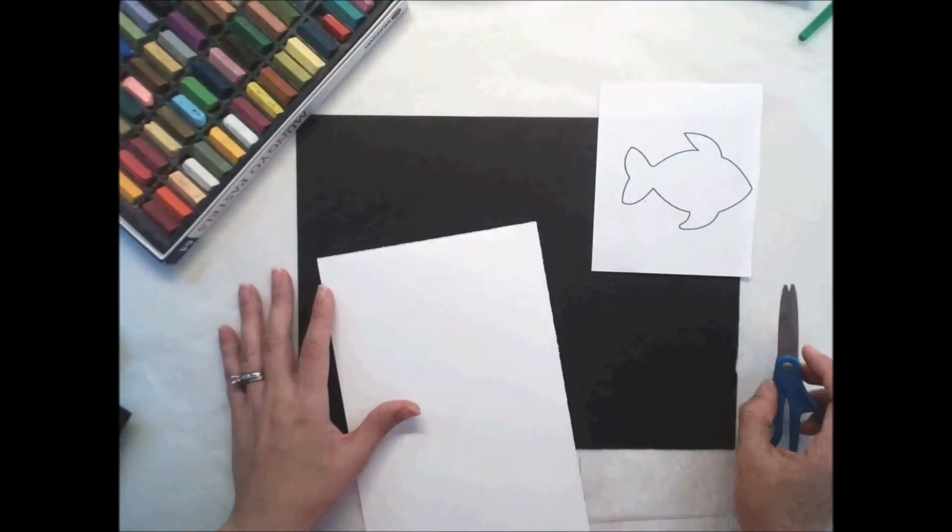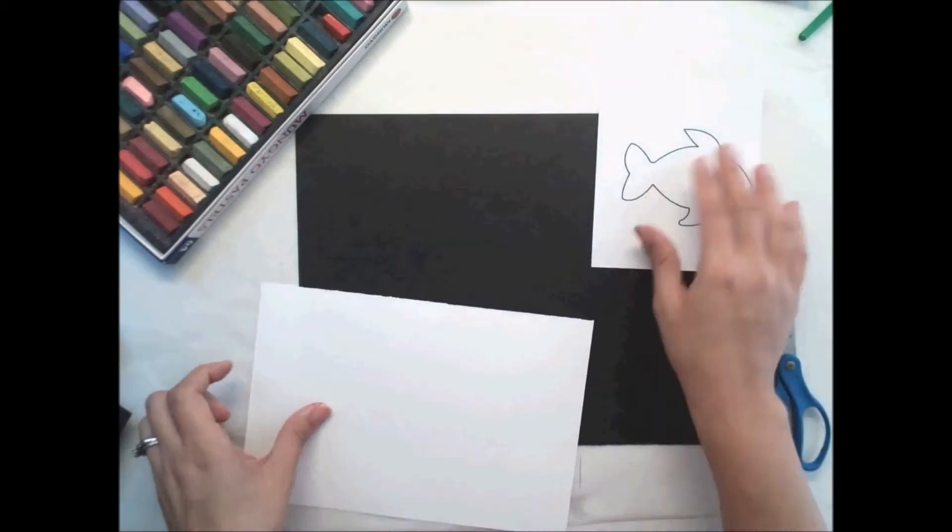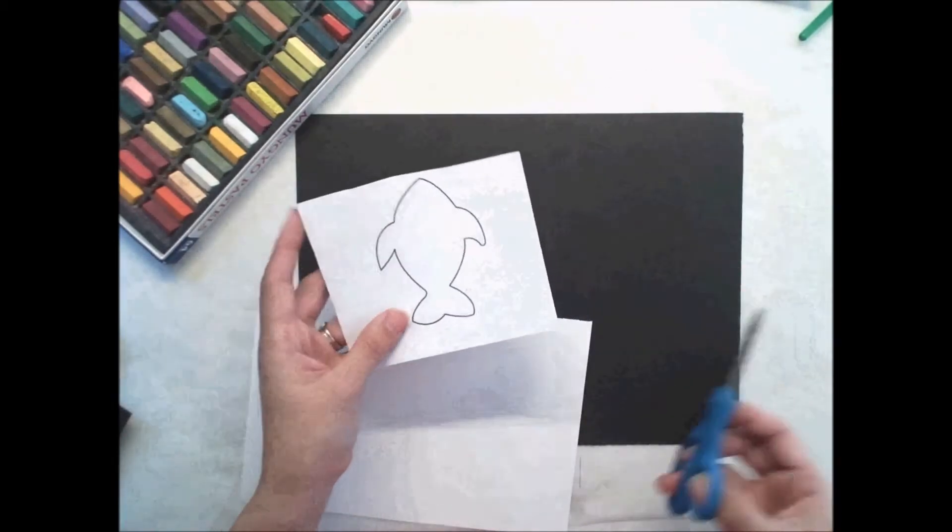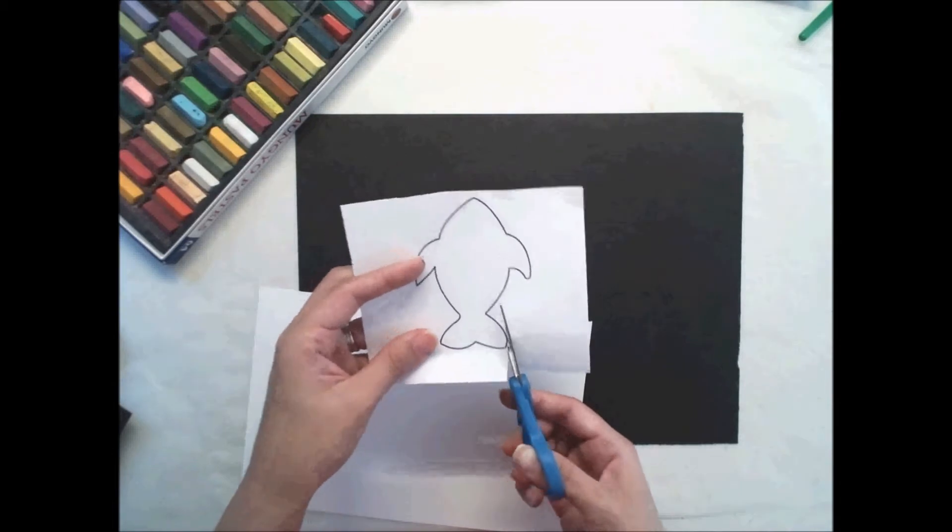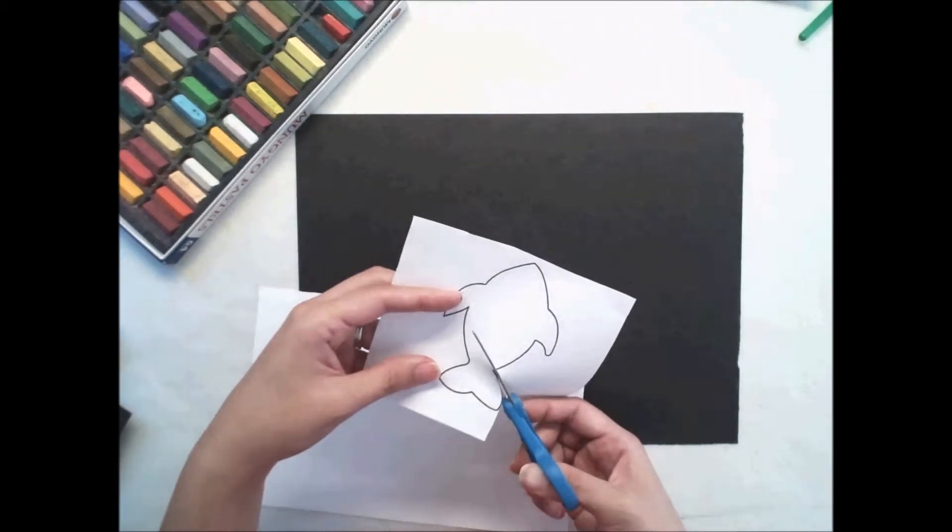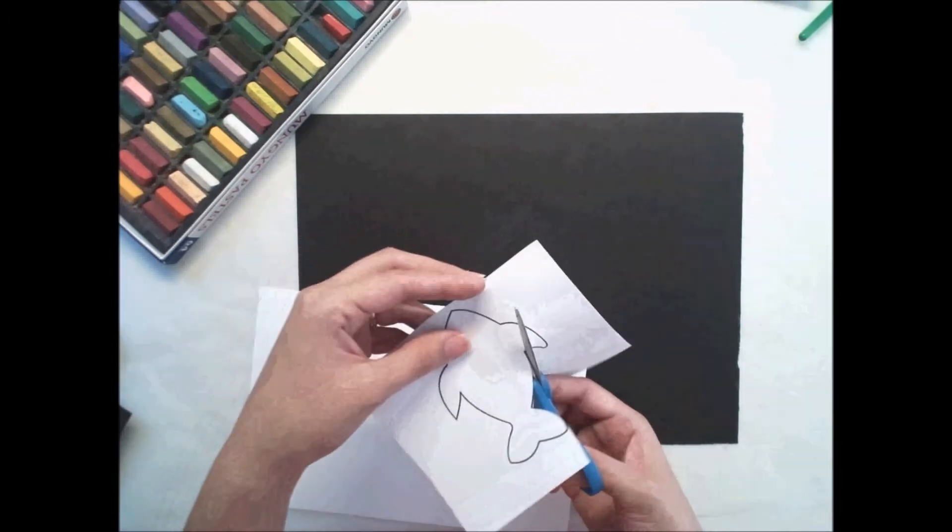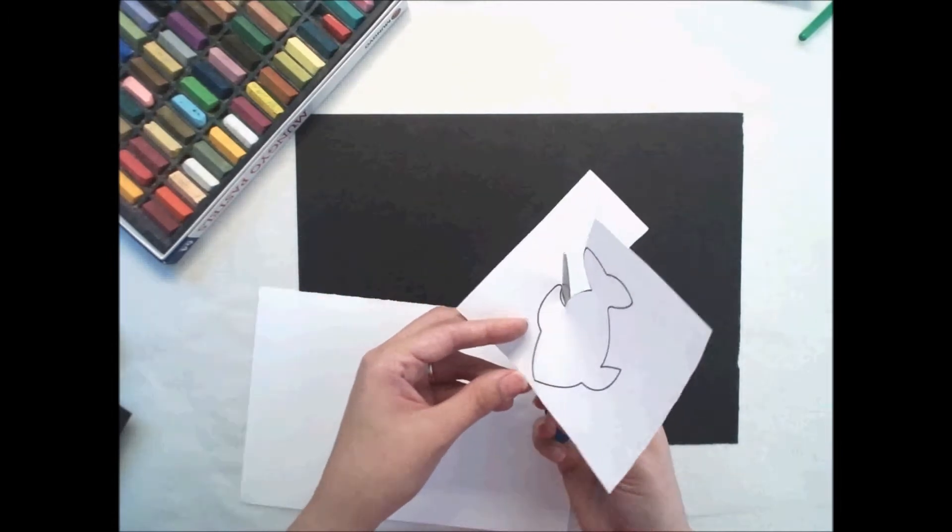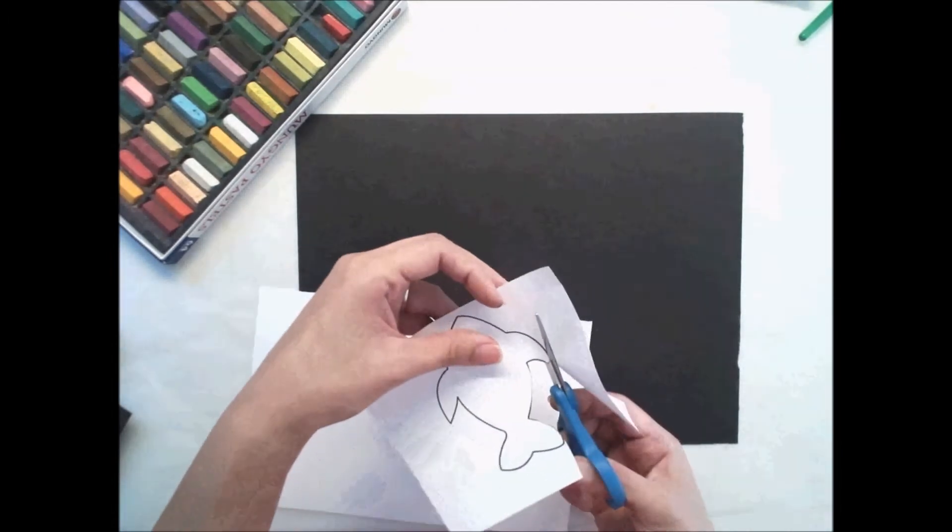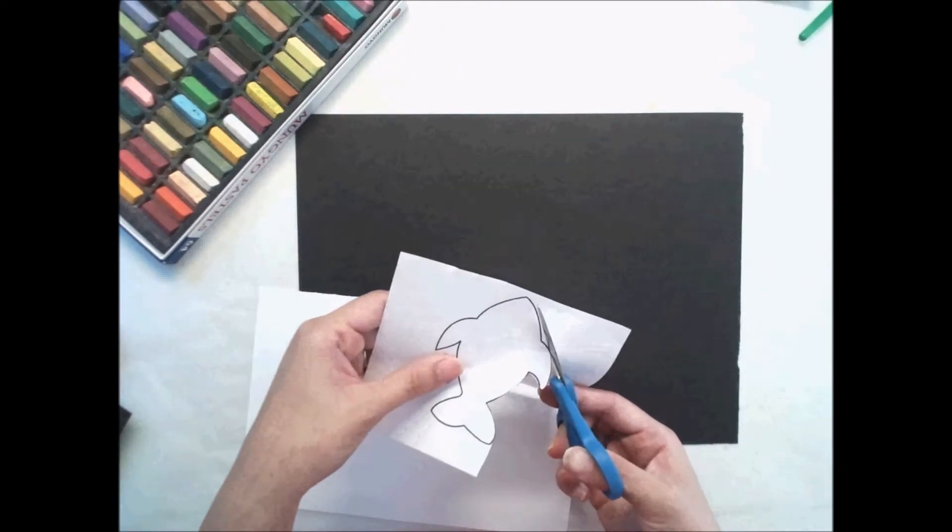So the first thing we need to do is cut out our fish. If you draw your own fish, that's totally fine. I just went on the internet and googled outline of fish and this little guy came up. I only want the outline. I don't need the scales or the eyes or anything in the middle. All I need is the outline. So I'm going to go ahead and carefully cut that out.